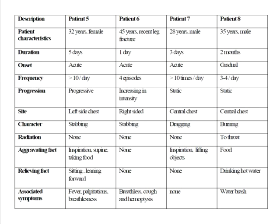Patient six is a 45-year-old with a recent leg fracture, pain for just one day, acute onset, four episodes per day, increasing in intensity, right-sided, stabbing nature, not radiating, no specific aggravating or relieving factors, associated with breathlessness, cough, and hemoptysis. This patient has a risk factor for pulmonary embolism as they are not ambulatory — thrombus can accumulate in the legs, dislodge, and produce infarction of the lung. The lateralized, rapidly progressing pain with breathing difficulty, cough, and hemoptysis is consistent with pulmonary infarction causing peripheral pleurisy.